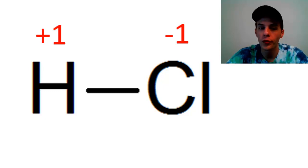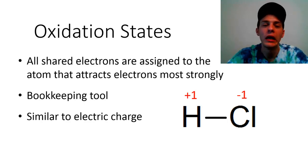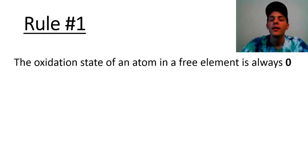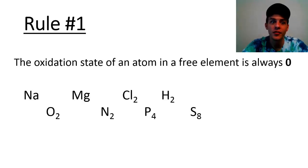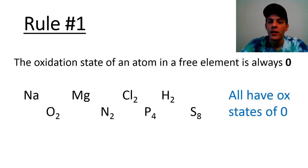We're going to talk about some rules for assigning oxidation states to atoms in any molecule, polyatomic ion, or element. Rule number one is the simplest: the oxidation state of any atom in a free element is always zero. So pure sodium, pure magnesium, diatomic chlorine, diatomic hydrogen, diatomic oxygen, diatomic nitrogen, phosphorus P4, sulfur S8 — regardless of the subscript, since these are pure elements with no other elements present, all atoms have oxidation states of zero.